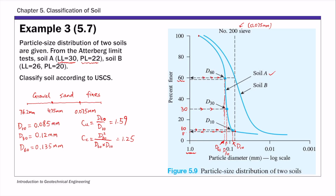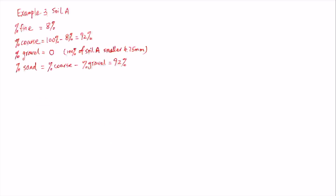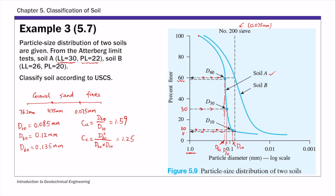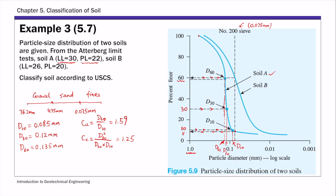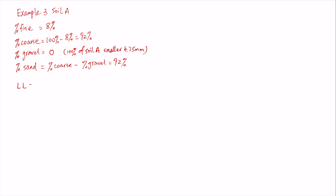We have now used all the particle size distribution information: percent fine-grained, coarse-grained, gravel, and sand, plus the two coefficients Cu and Cc. We are also given the Atterberg limit test results. For soil A, liquid limit LL is 30 and plastic limit PL is 22. The plasticity index PI is defined as LL minus PL, so PI equals 30 minus 22, which gives PI of 8.